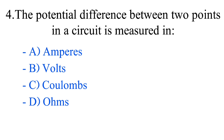Question number 4. The potential difference between two points in a circuit is measured in: option A, Ampere; option B, Volts; option C, Coulombs; option D, Ohms. The correct answer is option B, Volts.